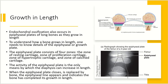Let's look at how a bone is able to grow in length. This endochondral ossification also occurs in the epiphyseal plates of long bones as they grow in length — this is how you grow taller. To understand bone growth in length, you need to know about the epiphyseal plate, or growth plate. The epiphyseal plate consists of four zones: resting cartilage at the top, then the zone of proliferating cartilage, then a zone of hypertrophic cartilage, and then the zone of calcified cartilage.